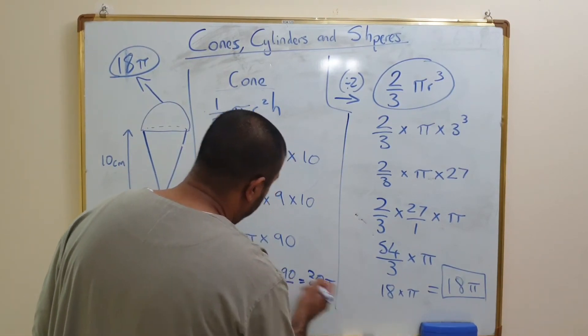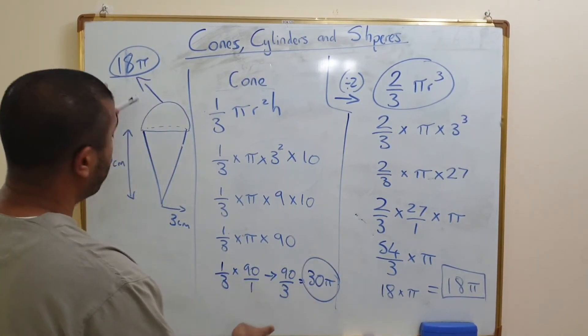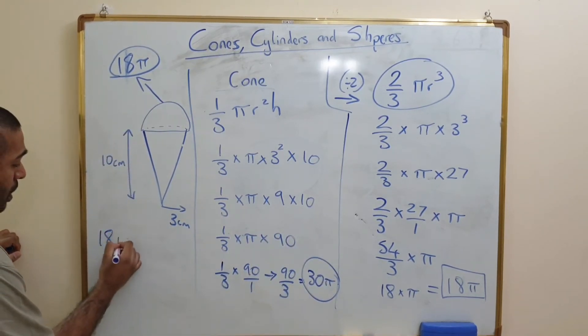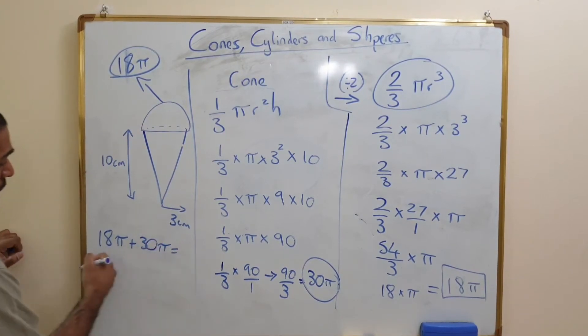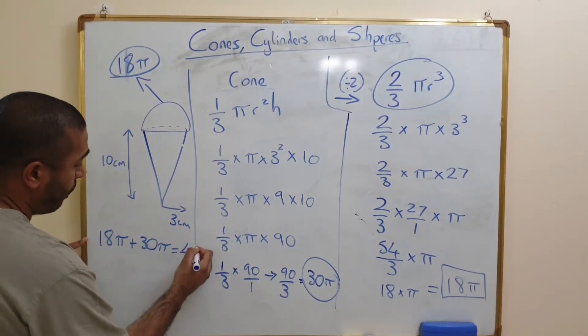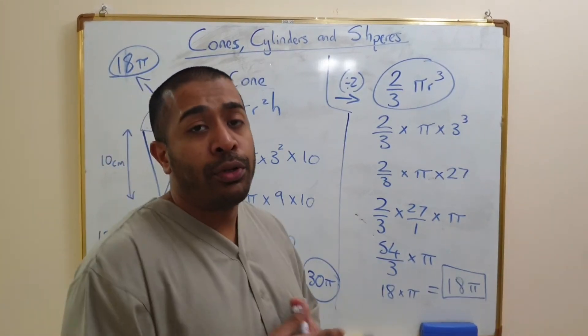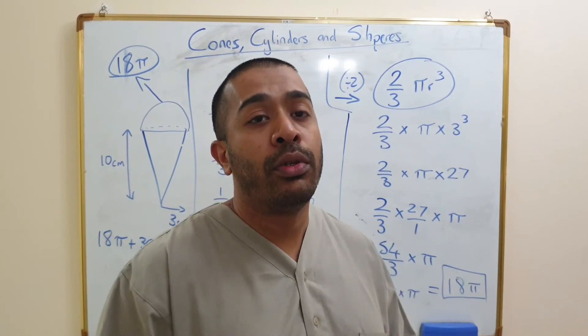And that's going to be multiplied by pi. So that answer is 30π. Now we've got our two answers, all we have to do is add them together. 18π plus 30π gives us 48π.